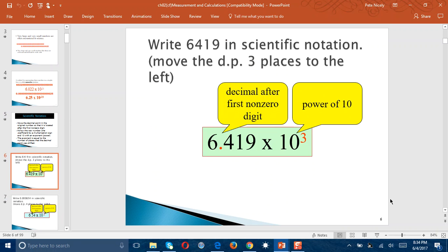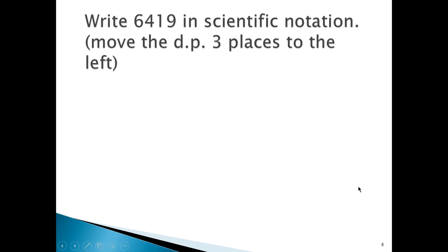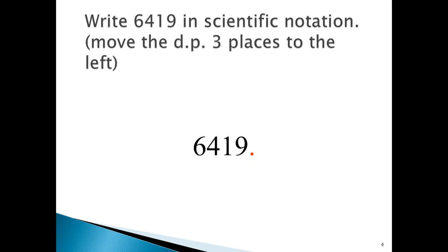Here is the first example. You're given 6419, and the question asks you to convert that to scientific notation. As noted, you need to move the decimal point three places to the left to end up with the coefficient. The decimal point is not explicitly shown, but we understand it to be right to the right of the last digit, the 9. If we move it one place to the left, the exponent becomes 1, so the number becomes 641.9 times 10 to the 1.